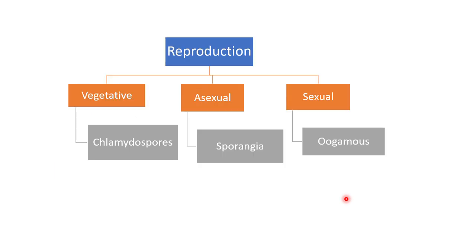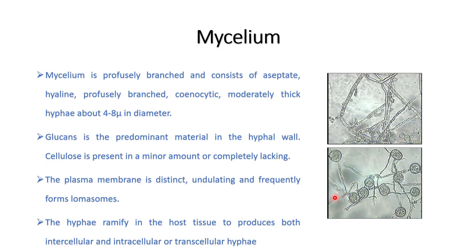Reproduction in Phytophthora takes place by vegetative, asexual, and sexual methods. Vegetative reproduction takes place by means of chlamydospores. As you can see in this electron microscopic view, the chlamydospore is a resting hypha that becomes laden with food reserves. It is surrounded by a thick multilayered wall and contains reserved food material. When favorable conditions arise, the chlamydospore germinates into a new mycelium.